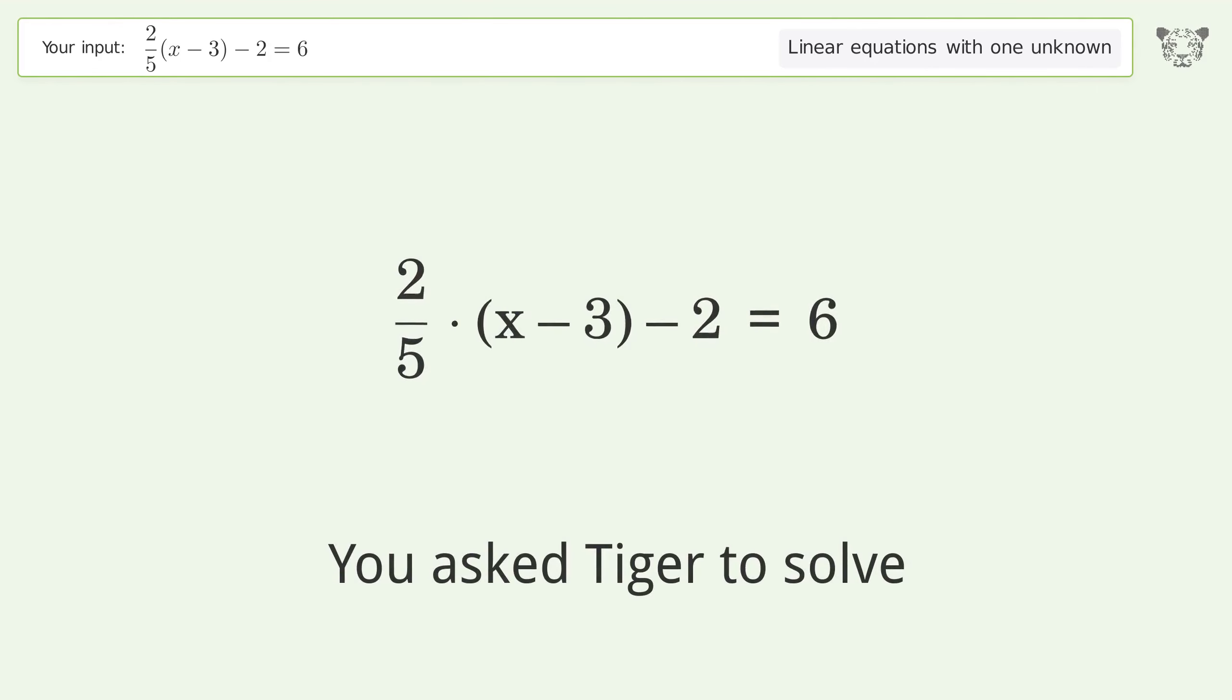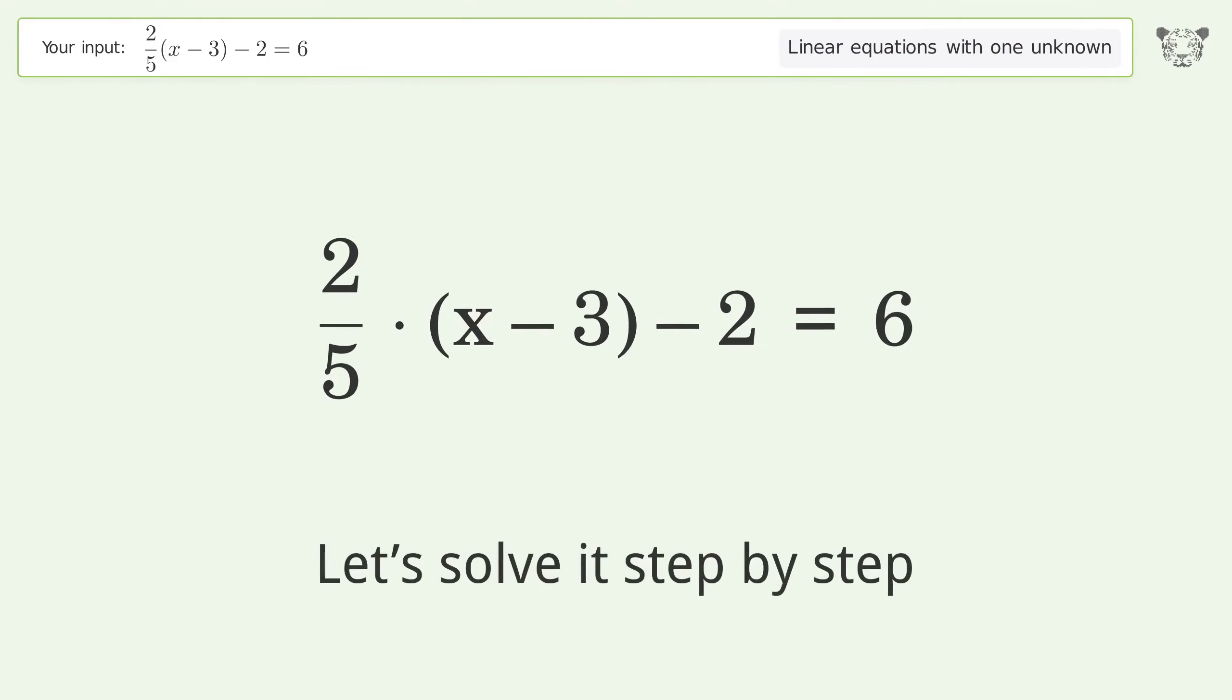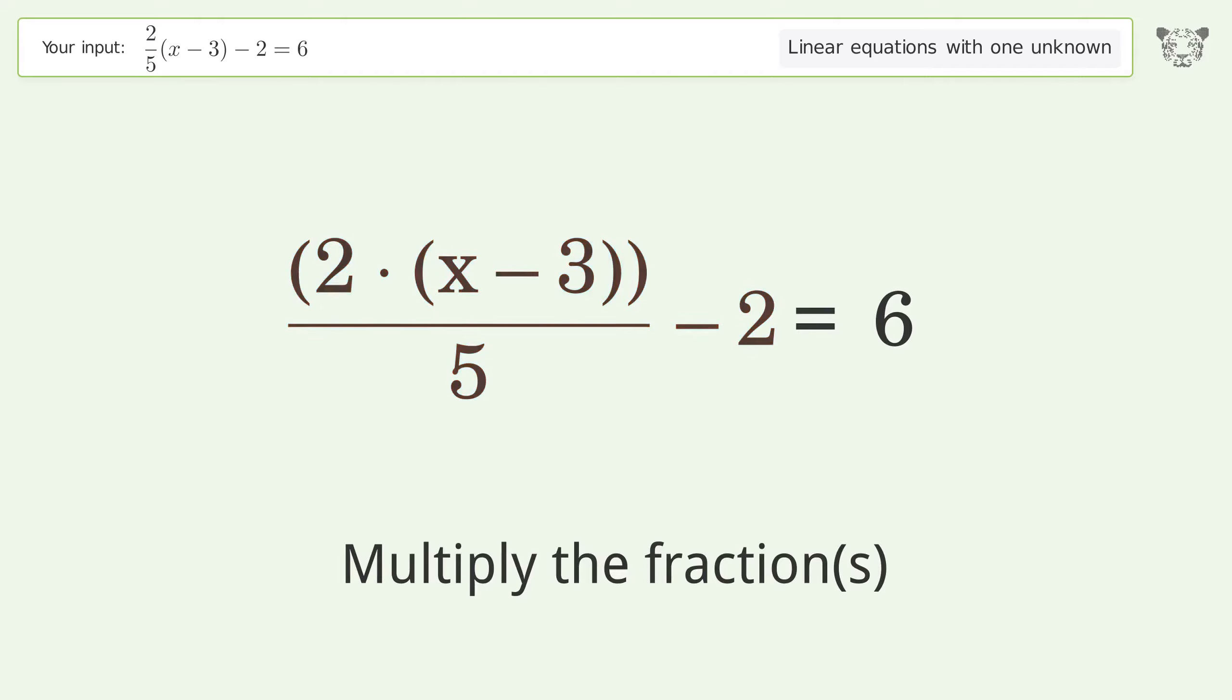You asked Tiger to solve this problem which deals with linear equations with one unknown. The final result is x equals 23. Let's solve it step by step: simplify the expression, multiply the fractions, and expand the parentheses.